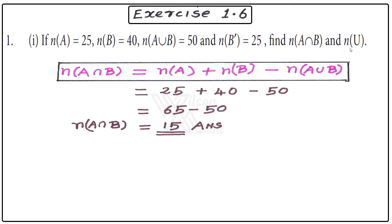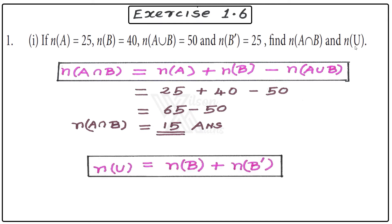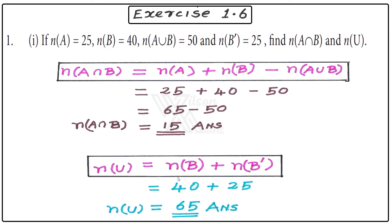Now we are going to find n(U). The formula is n(U) = n(B) + n(B'), because only the complement of B is given here. Substituting: n(B) = 40 plus n(B') = 25. So 40 + 25 = 65. Therefore n(U) = 65. That is your second answer.